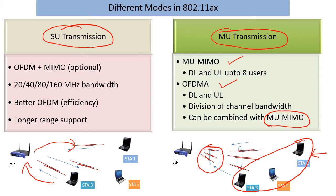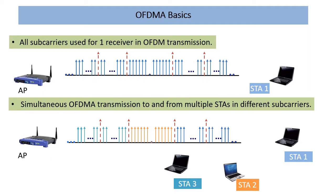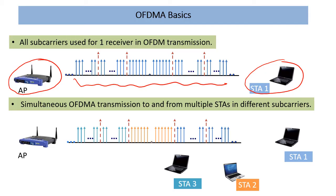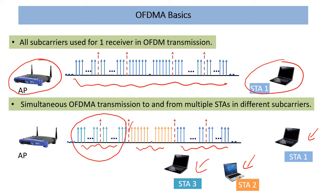Let's briefly cover OFDMA. So far, we were taking a bandwidth of 20, 40, 80, or 160 MHz, splitting it into sub-carriers, and sending data to one station per time — either AP to station or station to AP. Now with OFDMA, we split that bandwidth into Resource Units (RUs) as small as about 2 MHz, and simultaneously on the time axis send to multiple users or ask them to send to the AP. The separation is on the orthogonal sub-carrier or frequency axis.